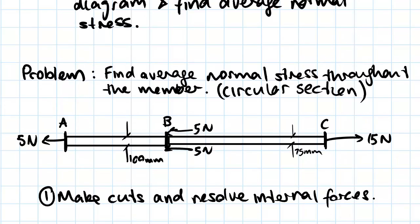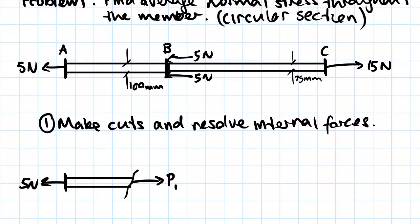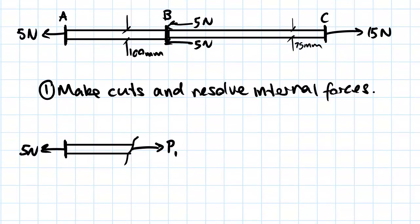So the way we're going to get into this question is we're going to make some cuts along this beam and we're going to resolve some internal forces. The first cut we're going to be making is anywhere between A and B because you can see that there's one force applied here and then the next forces are applied at B. So to work out the forces in this section here we need to take a cut through it.